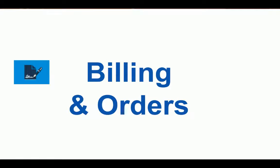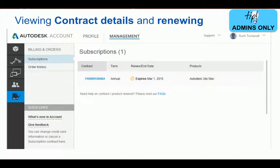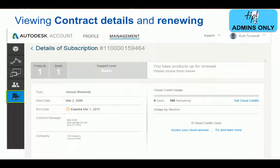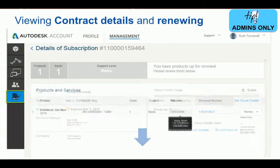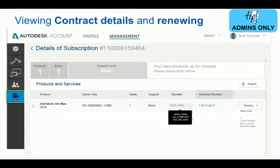While we're still under the Administrator role, we'll go over how contract managers and software coordinators can view contract details and check renewal information. The final icon from the navigation panel is for Billings and Orders, which is the destination for reviewing current agreements. You would click on this to see a master list of all the contracts, then click on a contract to see more details like contract number, start and expiration dates, or even purchase cloud credits. This is also where you can see if a maintenance plan is up for renewal and how to contact your reseller to renew.